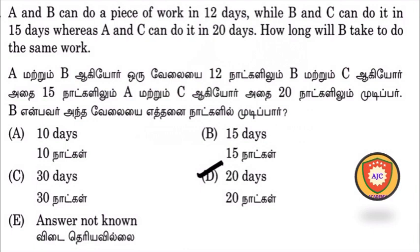So in this question, we will have time to get the same work. Now we will have time to get the same work in 14 days. B and C can do a piece of work in 15 days. A and C can do a piece of work in 20 days.